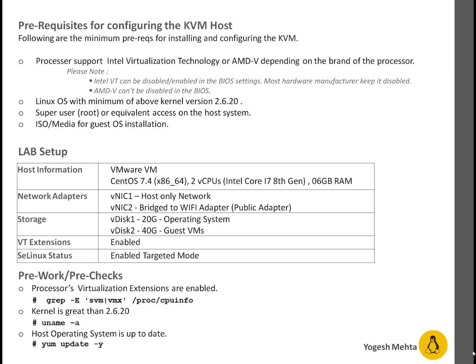In storage, it has two virtual disks — disk one and disk two. Disk one is the operating system drive, 20 GB in size. Disk two is to store guest VM images and it is 40 GB in size. VT extensions are enabled because that is a prerequisite for KVM. From a security perspective, SELinux is enabled and it is running in targeted mode — so SELinux is enabled and working.